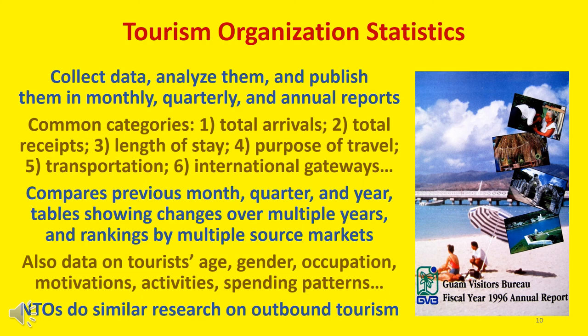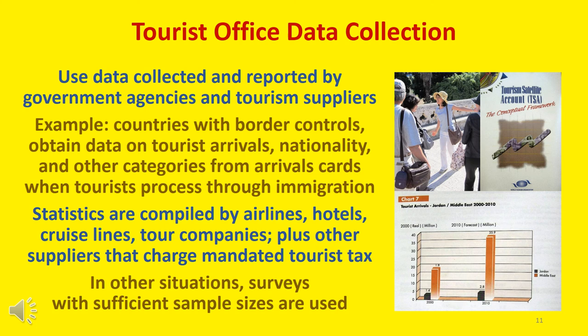NTOs also research outbound tourism using many of the same categories in order to determine the country's overall tourism balance. Most data used by tourist offices are collected and reported by government agencies and tourism suppliers. For example, for countries with formal border controls, data on tourist arrivals, nationality, and other categories can be obtained from arrival cards completed when processing through immigration. Statistics compiled by airlines, hotels, cruise lines, and tour companies, as well as other tourism suppliers that charge a mandated tourist tax, can also provide useful data. In other situations, questionnaire surveys with sufficient sample sizes are used.